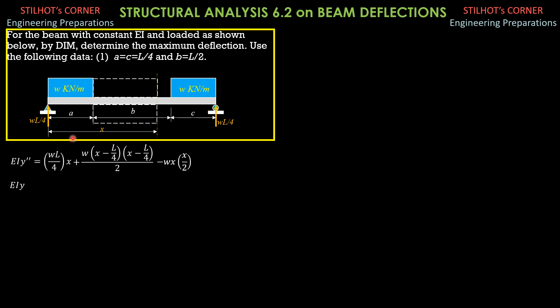Simplifying first, EI Y double prime equals WL over 4 times X plus W over 2 times quantity X minus L over 4 square minus W over 2 times X square. Then, integrating once, EI Y prime equals WL over 8 X square plus W over 6 quantity X minus L over 4 cube minus W over 6 X cube plus C sub 1.